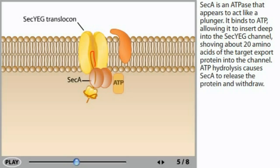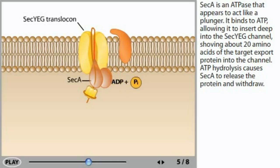SecA is an ATPase that appears to act like a plunger. It binds to ATP, allowing it to insert deep into the SecYEG channel, shoving about 20 amino acids of the target export protein into the channel. ATP hydrolysis causes SecA to release the protein and withdraw.